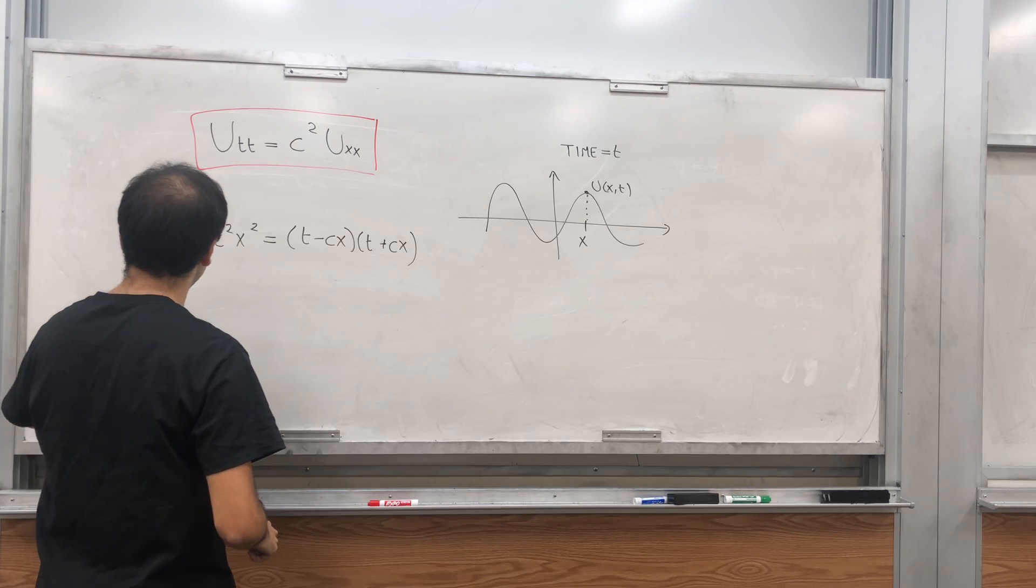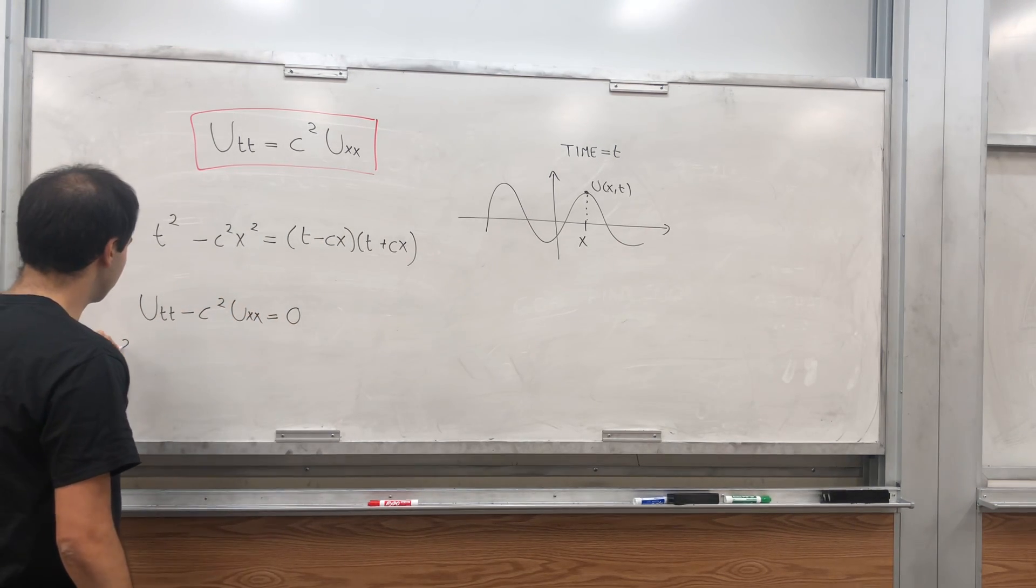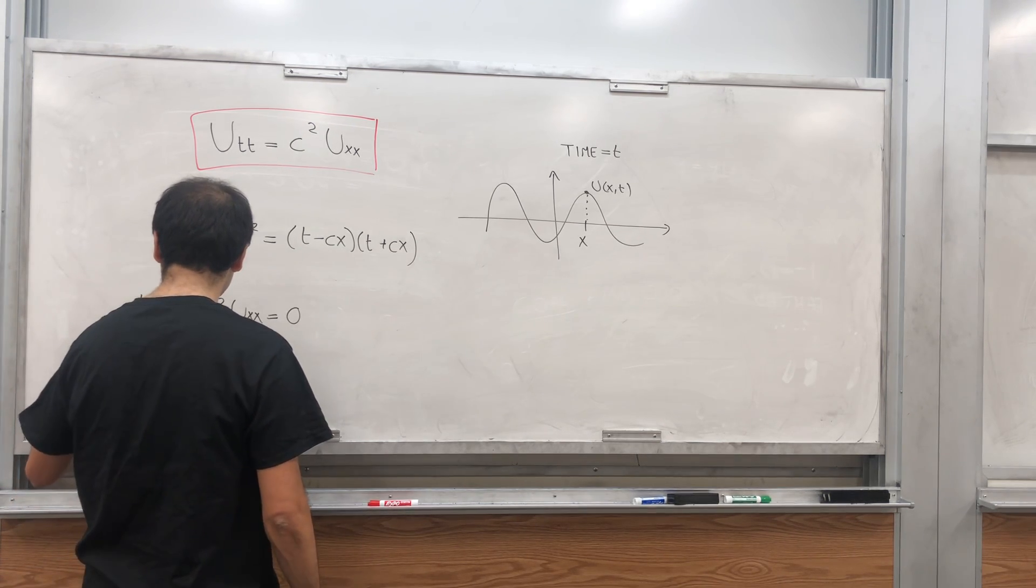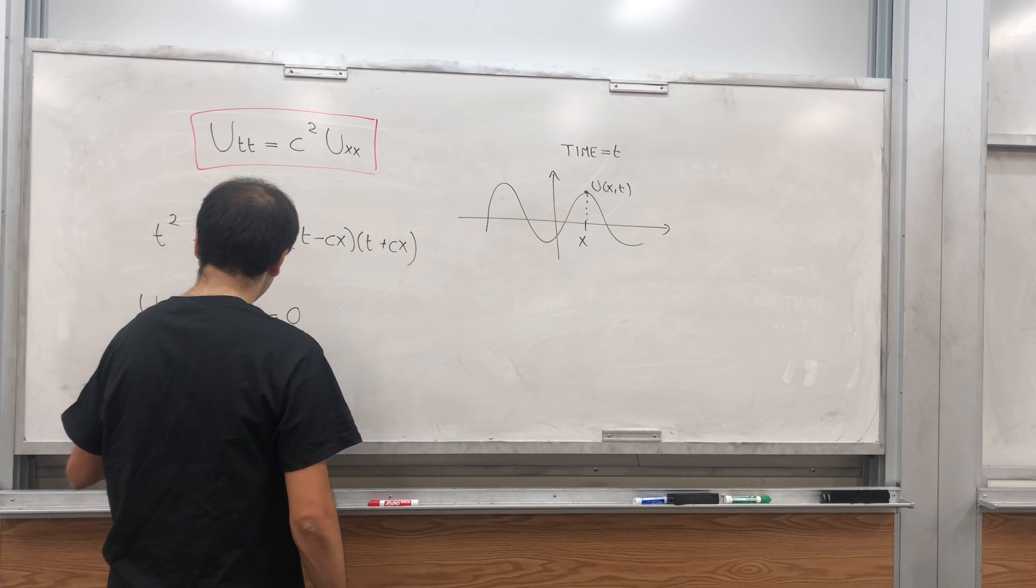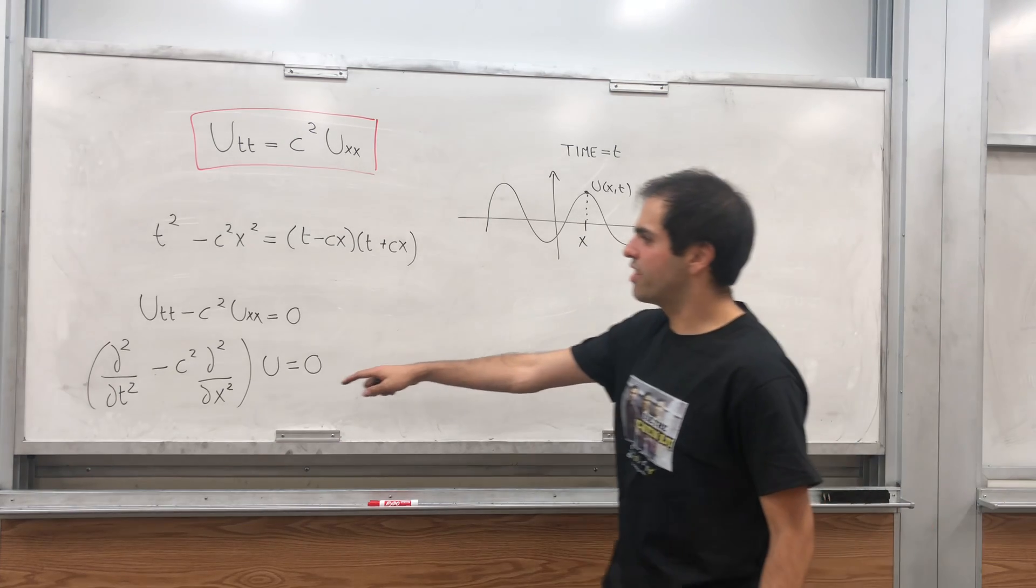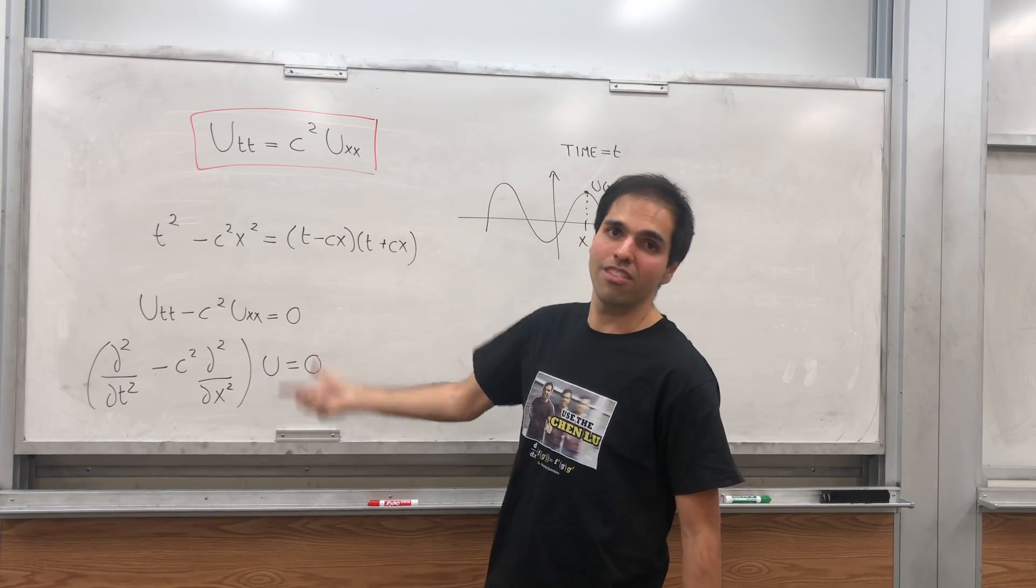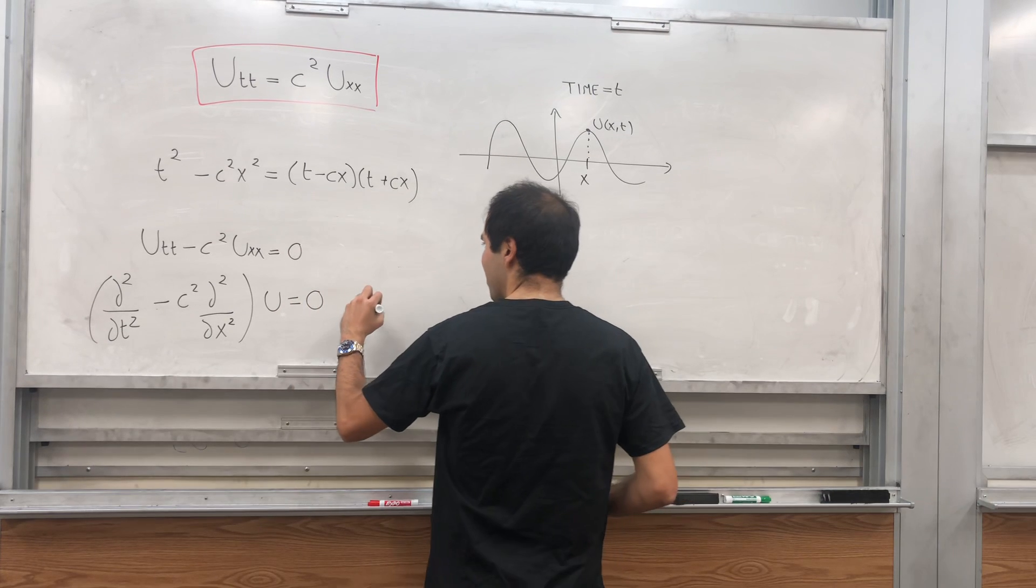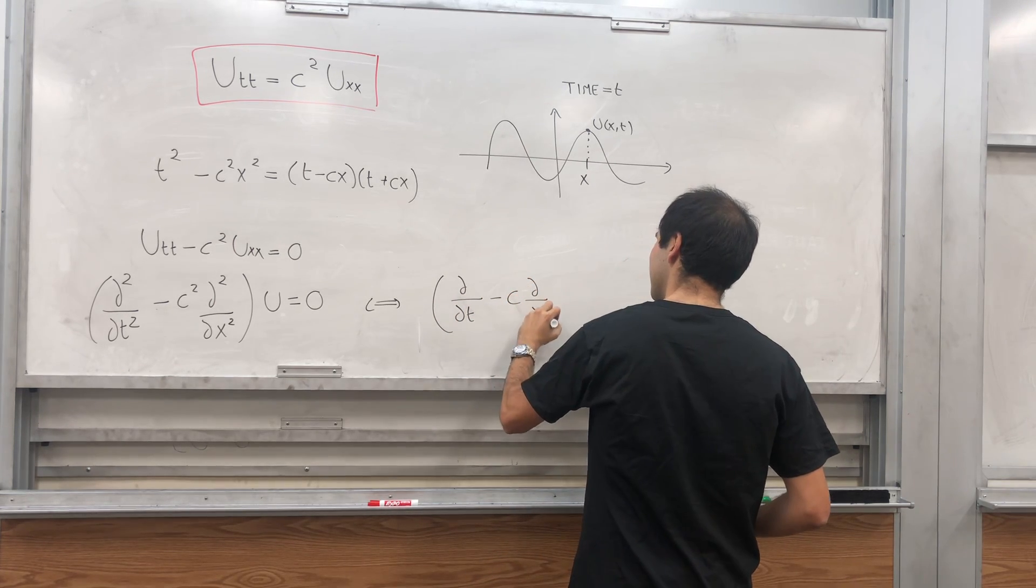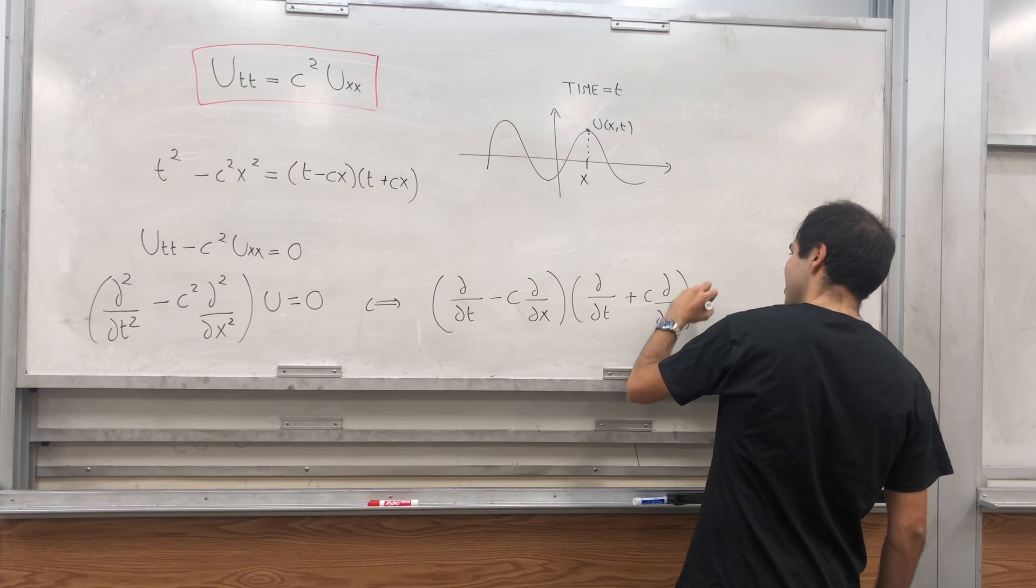Because notice you can rewrite this equation as u_tt minus c squared u_xx equals zero, and this is the same thing as del squared over del t squared minus c squared del squared over del x squared of u equals zero. And what I'm claiming is this is the same thing as saying del over del t minus c del over del x times del over del t plus c del over del x u equals zero.